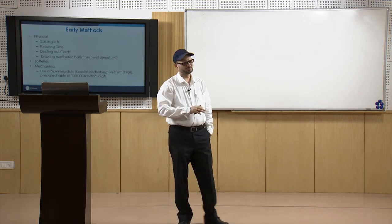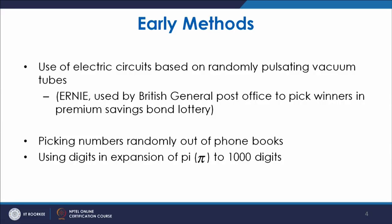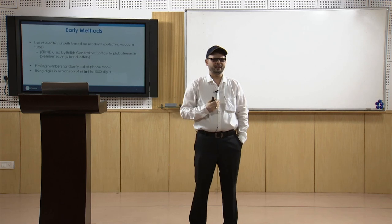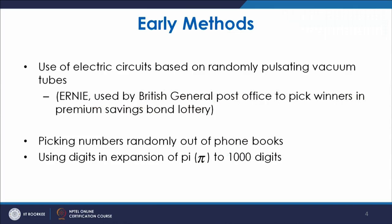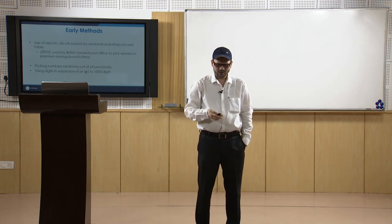Random numbers have also been produced using electrical principles — using electrical circuits on randomly pulsating vacuum tubes. This was used by the British General Post Office to pick winners in the premium savings bond lottery. Other examples include picking random numbers from phone books or taking digits from the expansion of pi to 1000 digits.